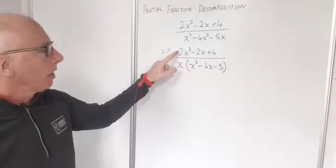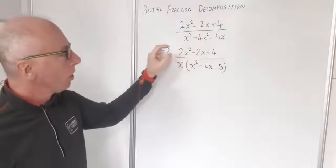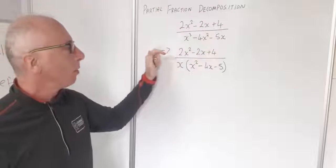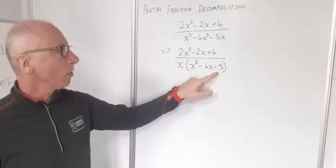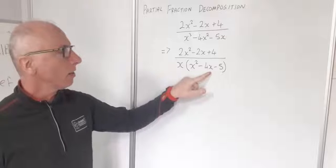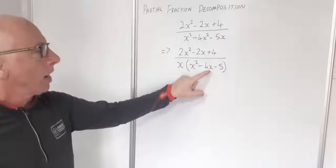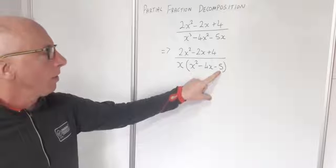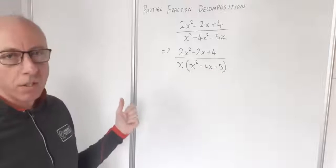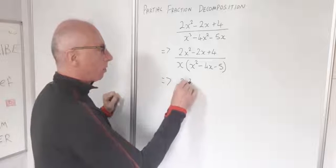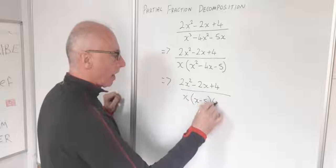Now I've got a quadratic in the numerator divided by x times another quadratic. For partial fraction decomposition we don't need to factor the numerator. Now the denominator's quadratic x squared minus 4x minus 5 can be factored straight away — the factors of 5 are 5 and 1, and minus 5 plus 1 gives minus 4 while minus 5 times 1 gives minus 5. So that factors as x minus 5 times x plus 1. The full expression is therefore 2x squared minus 2x plus 4 over x times x minus 5 times x plus 1.